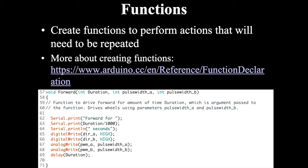The second tip is how to create functions in your code for tasks that need to be repeated. For example, I've created a function called 'forward' — instead of writing multiple lines of code every time I need to drive the robot forward, I just call this function and tell it how fast and how long. I only had to write that block of code once. There's also an Arduino online reference for how functions work, and a link is provided.